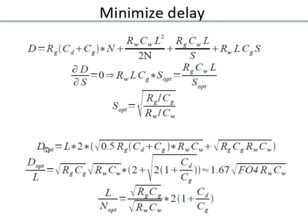After plugging in the optimal size and number of repeaters, the total delay is obtained as a function of all parameters. Importantly, the delay is now only linearly dependent on L — not quadratically. This is a very important result: without repeaters the delay scales as L², but with optimal repeaters it scales as L.